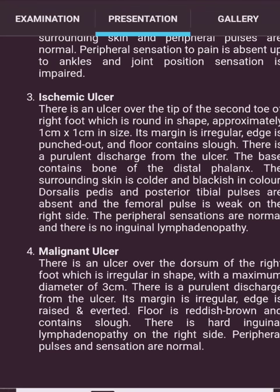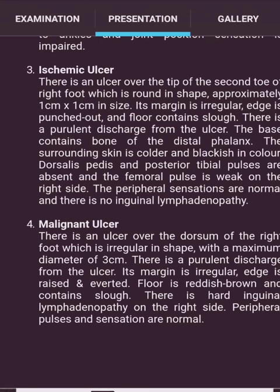Ischemic ulcer presentation: 'There is an ulcer over the tip of the second toe of the right foot, round, approximately 1 cm by 1 cm. The margin is regular with a punched-out edge; the floor contains slough. There is purulent discharge; the base contains bone of the distal phalanx. The surrounding skin is cold and black. The dorsalis pedis and posterior tibial pulses are absent and the femoral pulse is weak on the right side. Peripheral sensation is normal and there is no inguinal lymphadenopathy.'